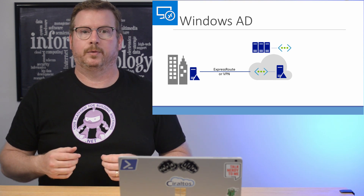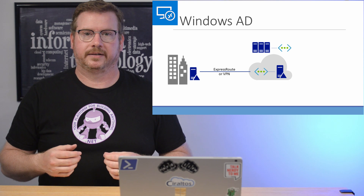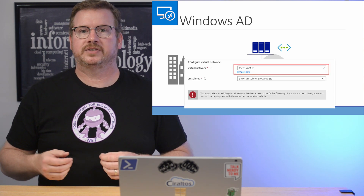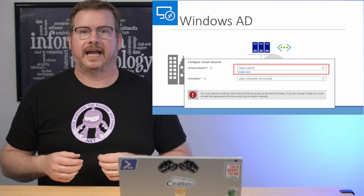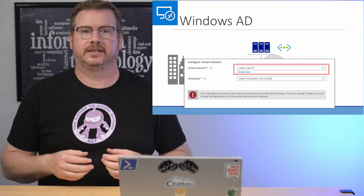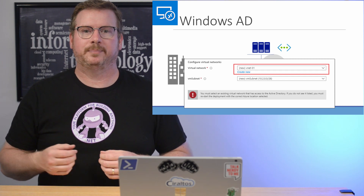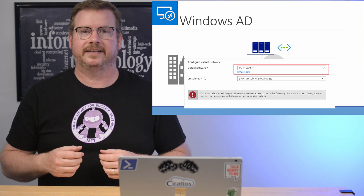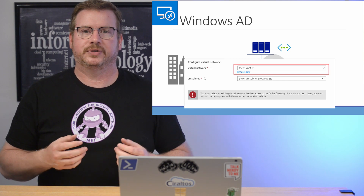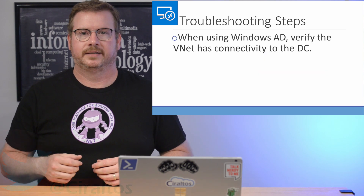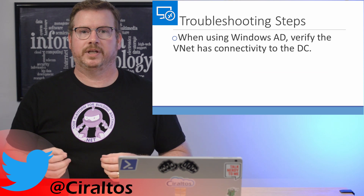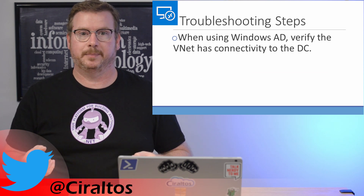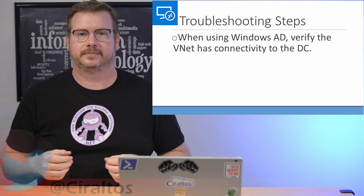One common problem with deploying Windows Virtual Desktop was the default setting to create a new VNet. A VNet by default does not have connectivity to any other VNet — that requires a VPN connection or VNet peering. So if you deploy a new VNet, that VNet cannot communicate with the VNet that has access to the domain controller, and the deployment will fail with the domain join error. The image on screen shows the settings from the Azure portal — notice the note that it has to have connectivity to a domain controller. With the Spring 2020 update, it no longer defaults to a new VNet and asks you to select an existing VNet. Tip 1: when using Windows AD, be sure the VNet has connectivity to the domain controller.